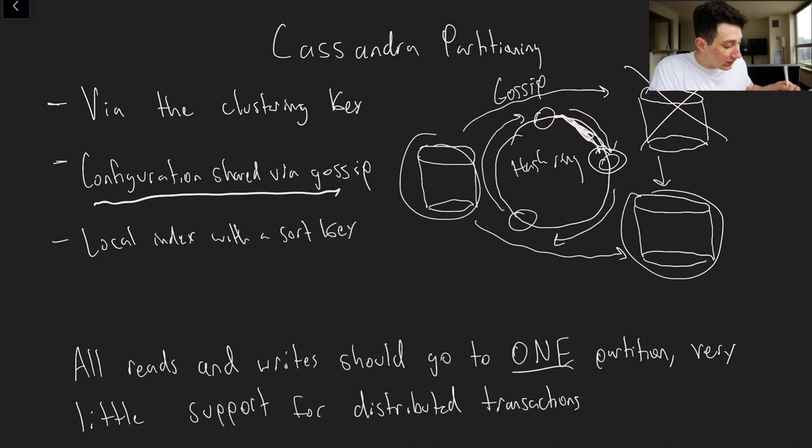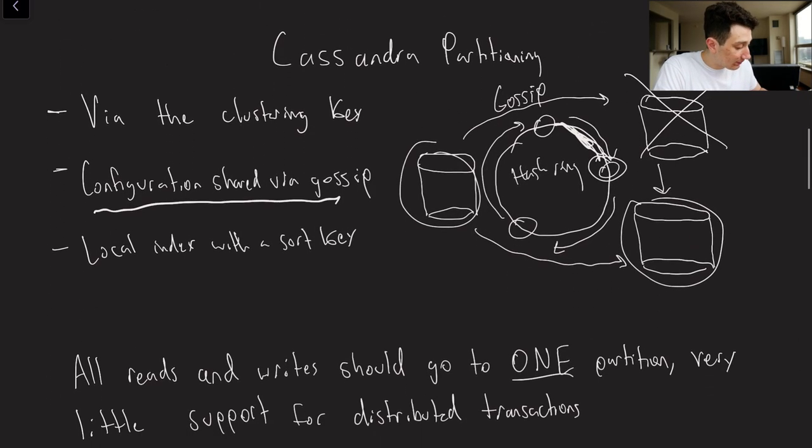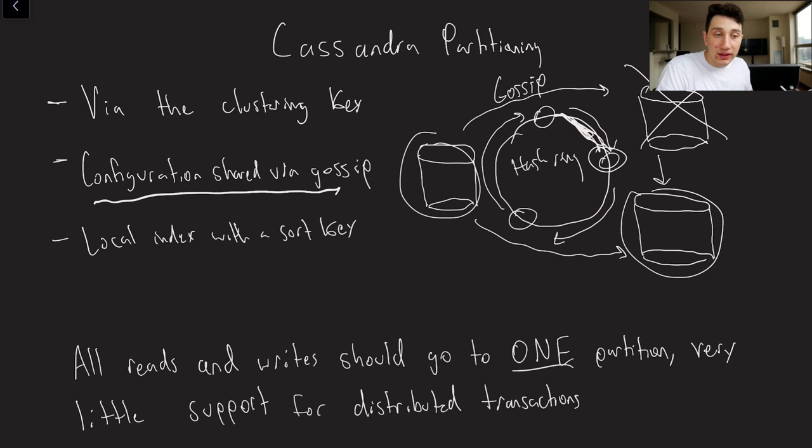So within each partition, the rows are sorted based on the value of the sort key. Keep in mind the reason I call that a local index is because they're only sorted within that single partition. If we're looking at a different partition, then the sort key is pretty much irrelevant across them.